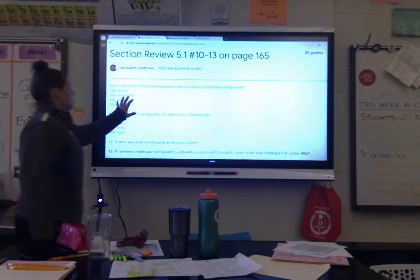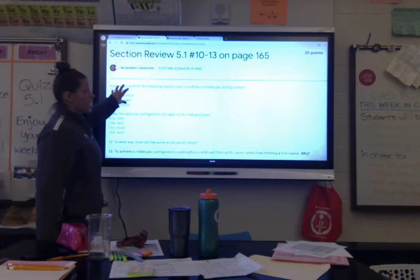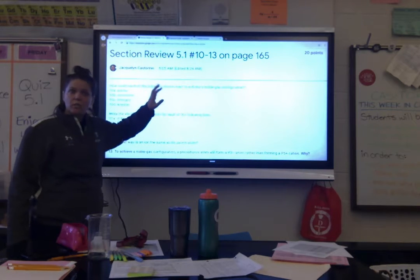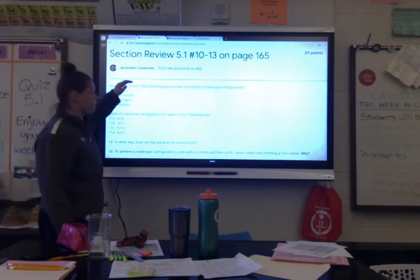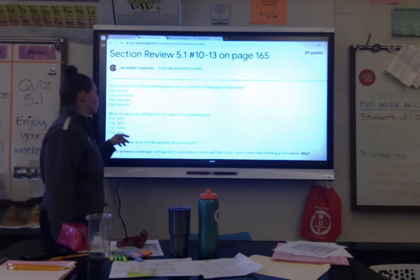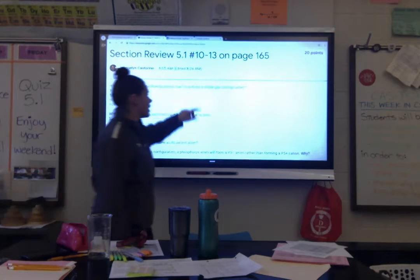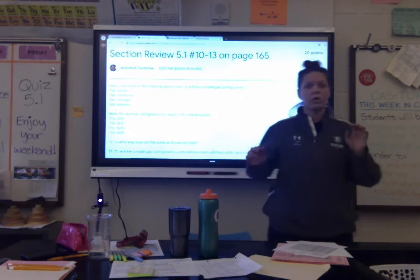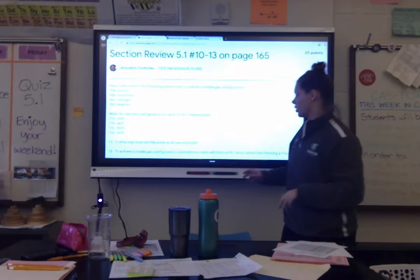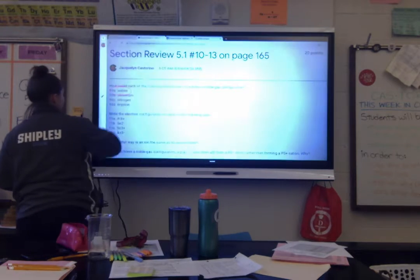We're going to go over how to do number 10 first. This is not a multiple choice question — we have to do all four parts of number 10, they are four separate questions. The question asks: how could each of the following atoms react to achieve a noble gas configuration? We're going to start with iodine, question 10A.